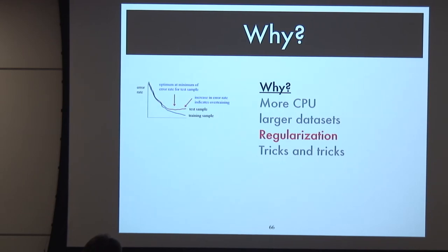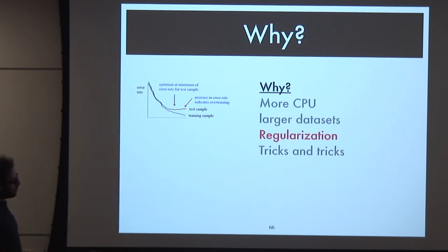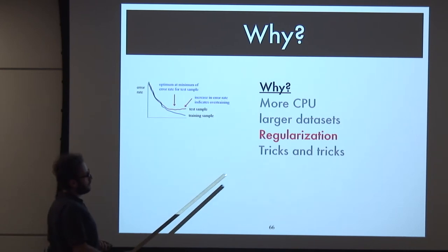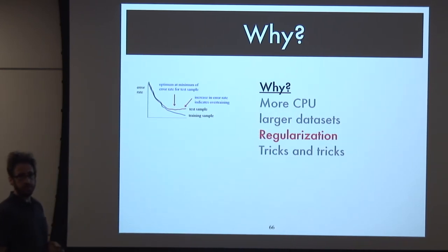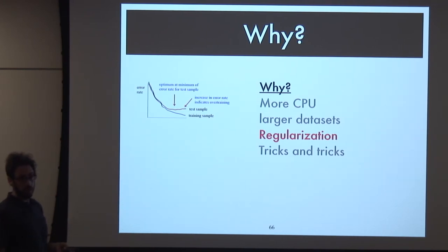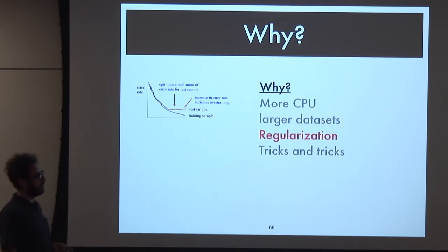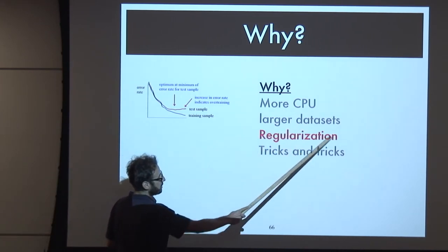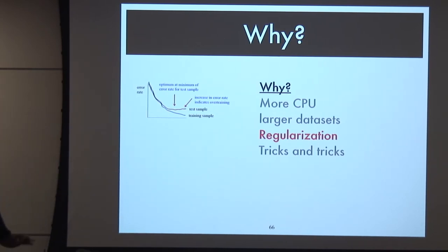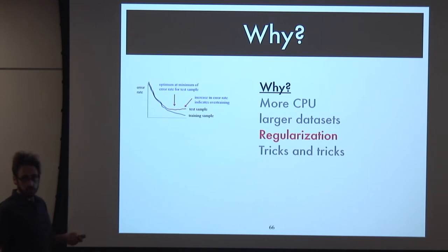Why is deep learning suddenly possible? Previously, people only used shallow networks. The answers are many-fold. First, we just have more computers - we can generate the huge samples needed to define problems in higher-dimensional spaces, and we have GPUs, CPUs, and farms of these things that are more powerful. We can spend more time training and push harder. Very importantly, there are all these regularization tricks to avoid overtraining. Building a very complicated model applied to a very large dataset makes it very easy to overlearn.